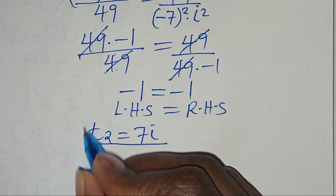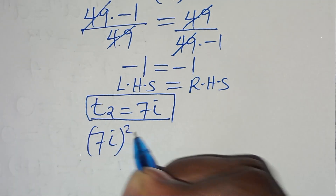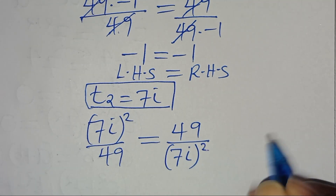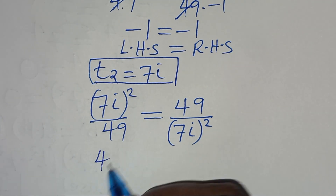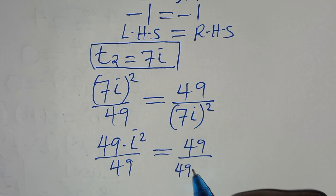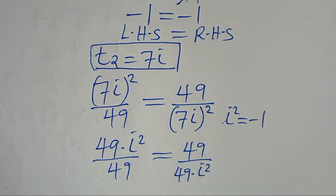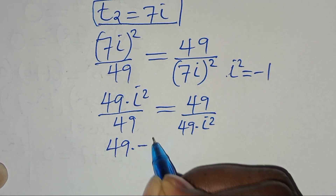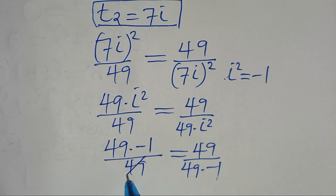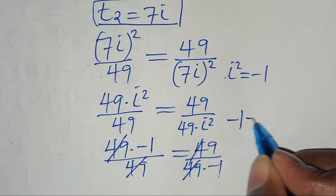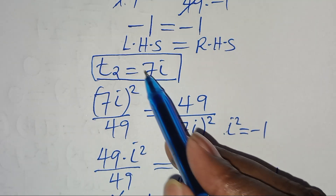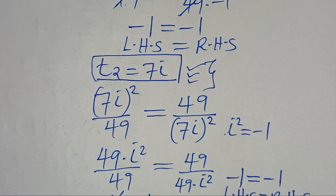For t₂ equals 7i: we have (7i)² divided by 49 equals 49 divided by (7i)². This gives 49 times i² over 49 equals 49 over 49 times i². Since i² equals minus 1, this becomes 49 times minus 1 over 49 equals 49 over (49 times minus 1), so minus 1 equals minus 1. Therefore t₂ satisfies the equation.